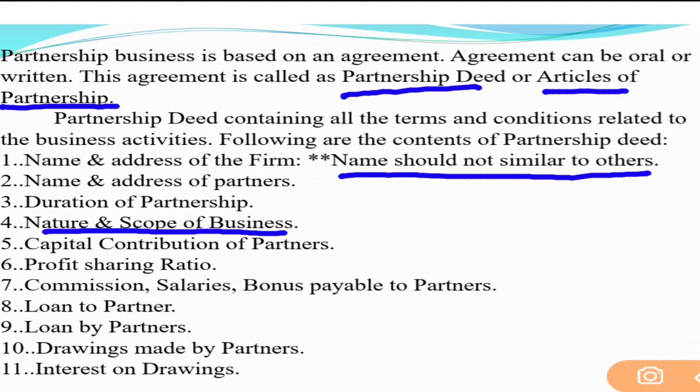Next: nature and scope of business — what type of business the partnership firm will do. Whether you are doing a ready-made goods business, a manufacturing business, or a service-providing firm, the nature must be written in advance. Capital contributed — how much capital each partner has contributed must be written. Also, the profit sharing ratio must be decided and written in advance.